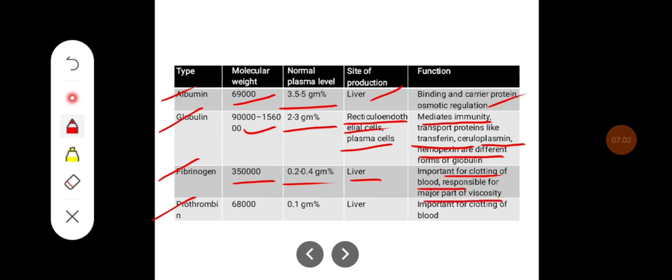Fibrinogen provides the major part of viscosity to the blood. Prothrombin has a molecular weight of around 68,000, with a concentration of 0.1 gram percent. It is produced in the liver and is an important clotting factor in the blood.